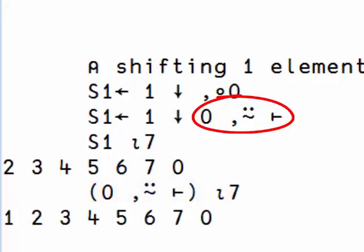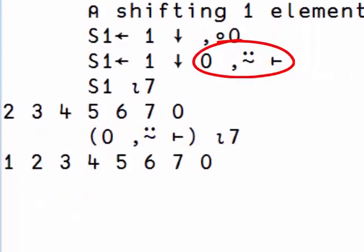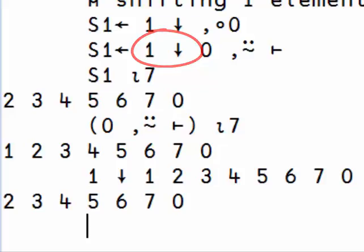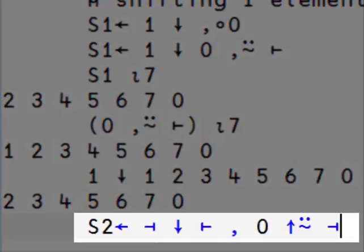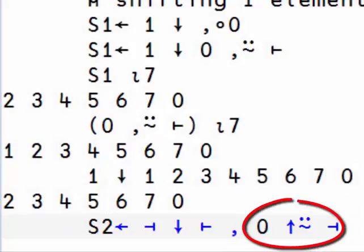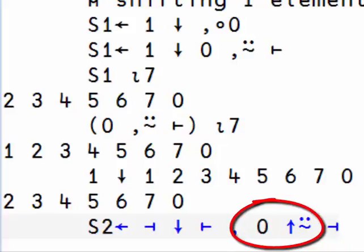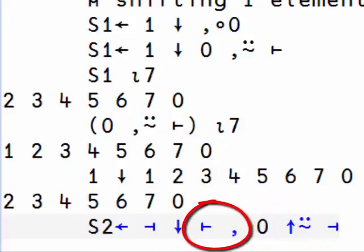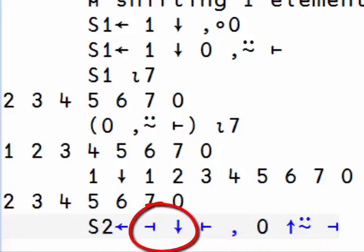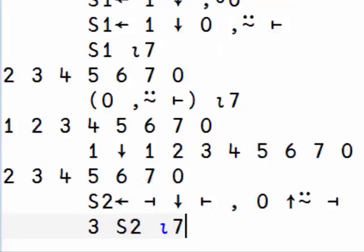The way it works is like this. First we pad a zero to the right of our argument, then we drop the first number. Here's a dyadic version where you specify the number of elements to drop to the left. First we determine the number of zeros to pad, then we catenate them to the right argument, then we use the left argument to drop that result.